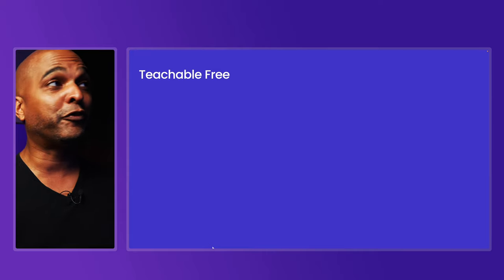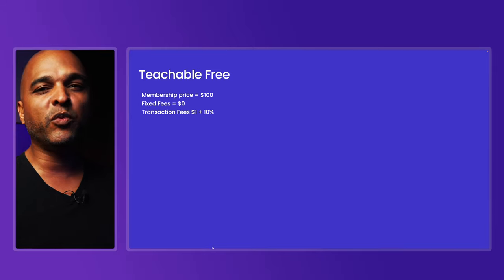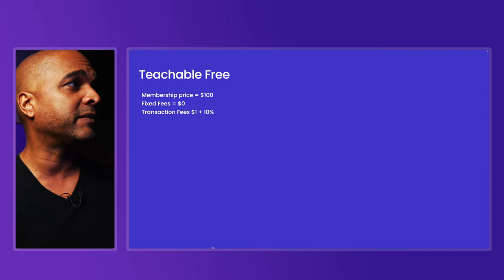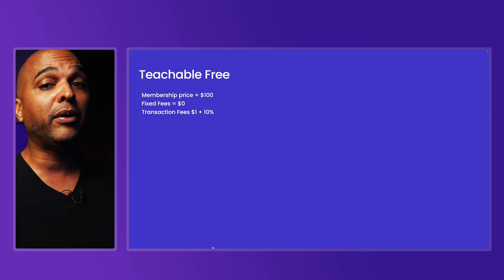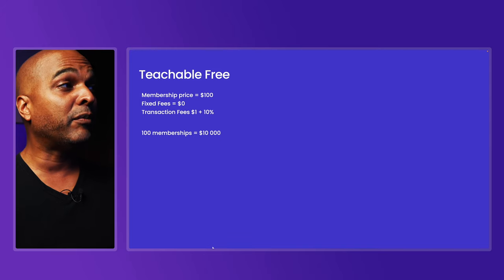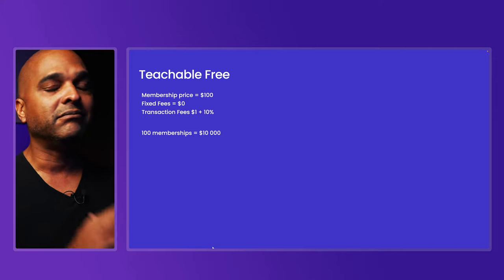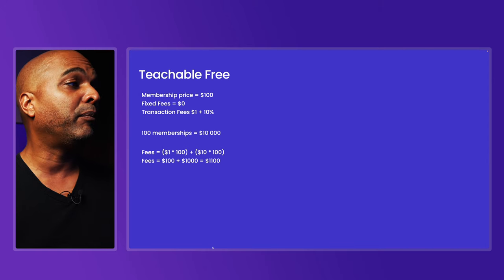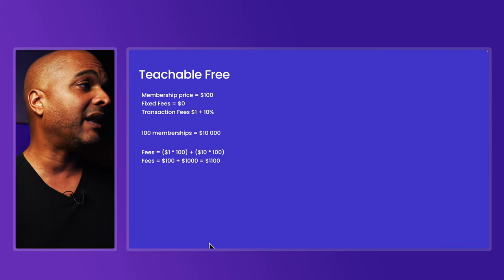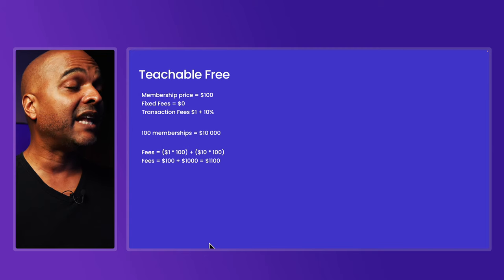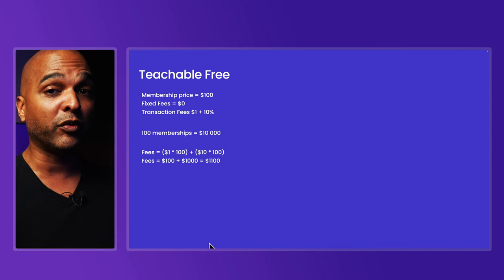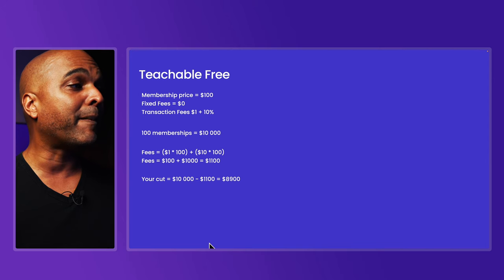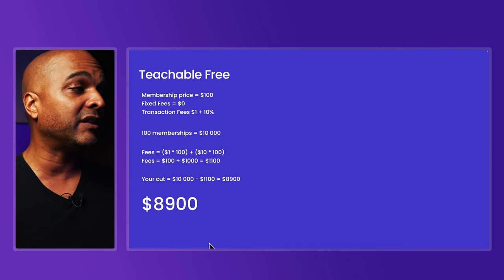Let's start with the Teachable free plan. Let's imagine we want to sell a membership for an annual price of $100. The fixed fees are $0, but transaction fees are $1 per transaction plus 10%. So for 100 memberships totaling $10,000, the fees come to $100 (from $1 × 100) plus $1,000 (10% × $100 × 100) = $1,100 in fees. Your cut would be $10,000 minus $1,100, which equals $8,900.